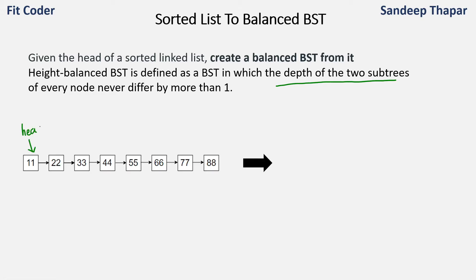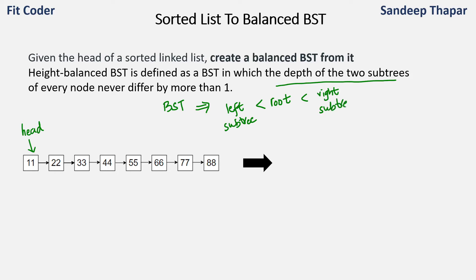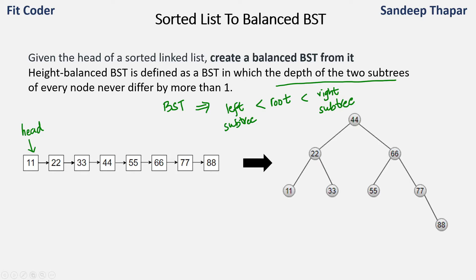Let's see an example. We have this linked list which is sorted and we need to create a balanced binary search tree from it. In a BST, the left subtree is smaller than the root and the right subtree is greater than the root. This property is true for any BST. Now we also want to make it height balanced, so half of these nodes will come on the left side and half on the right side. One BST that can be created from this linked list is rooted at 44.